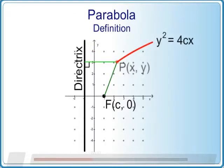A point P on the parabola will have the same distance to the focal point as to the directrix.